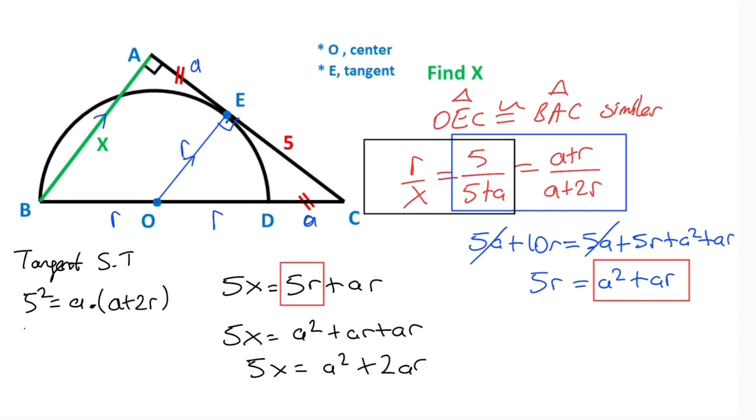So 25 equals a squared plus 2ar. Notice that we have two same expressions. That means 5x must equal 25.